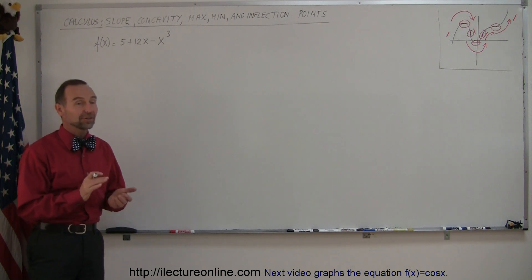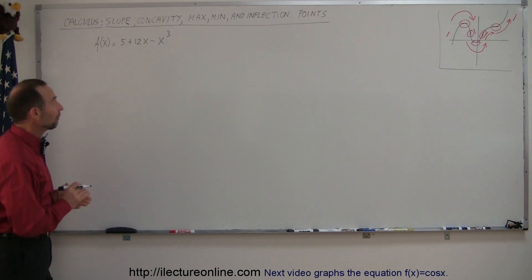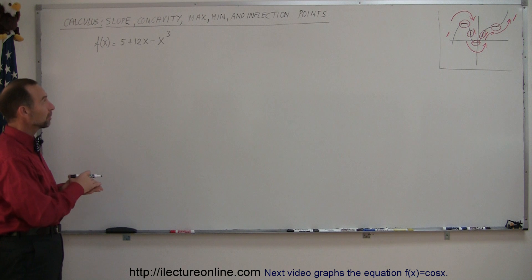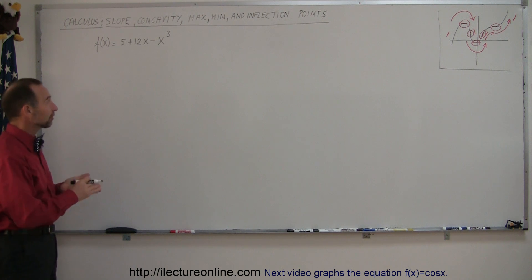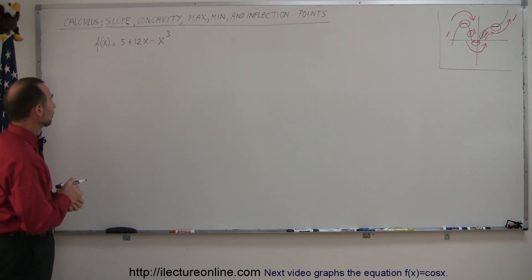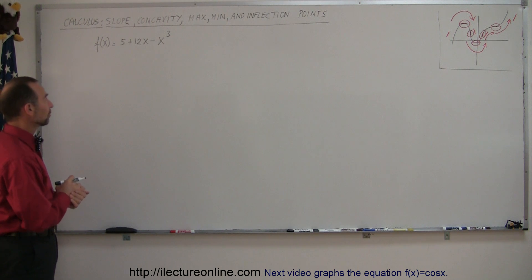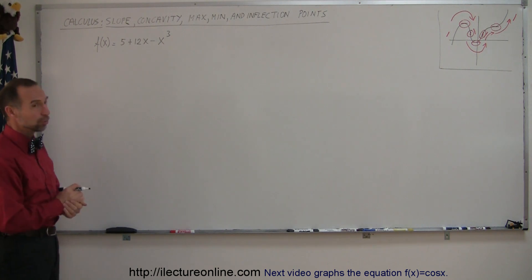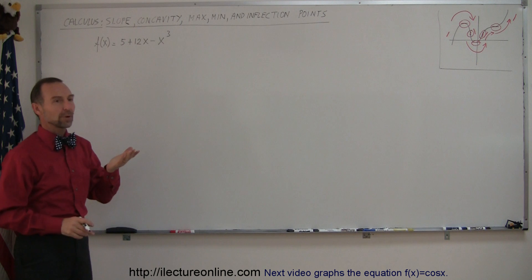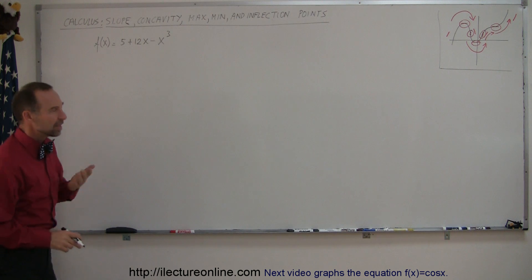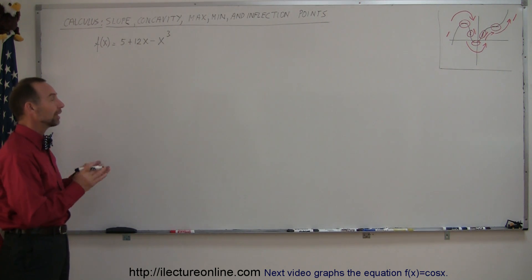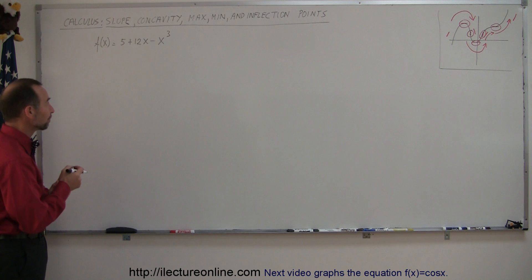Welcome to iLecture Online. Here's an example of how to find the slope, the concavity, the maximum, the minimum, and the inflection points on a function. The function is f(x) = 5 + 12x - x³. It's a cubic equation, not a quadratic equation, so that means we will probably find multiple of these points. Let's go ahead and follow our technique.